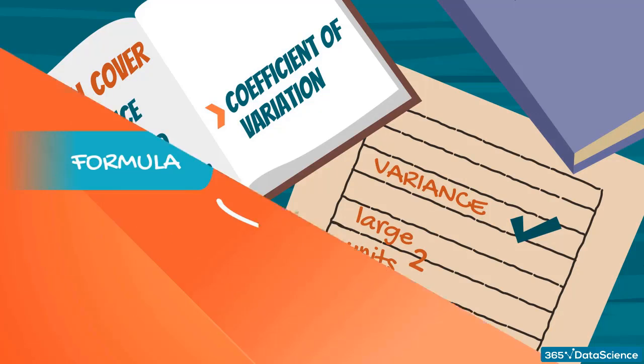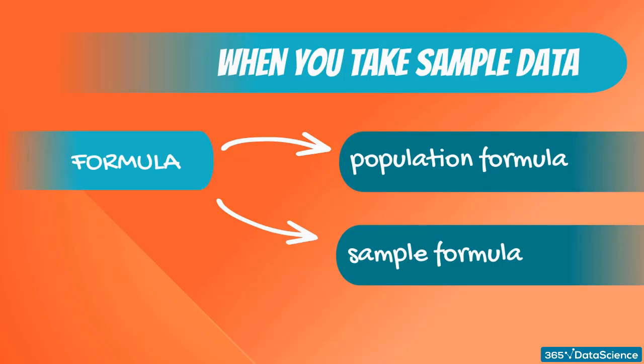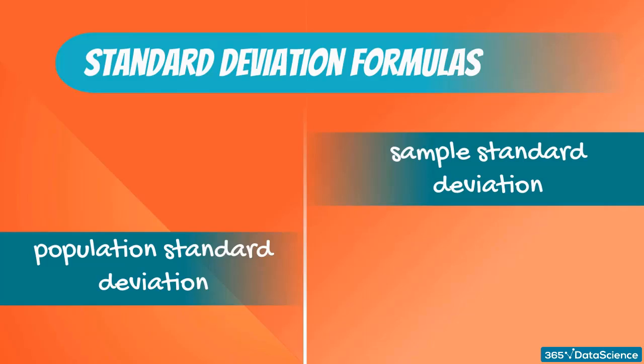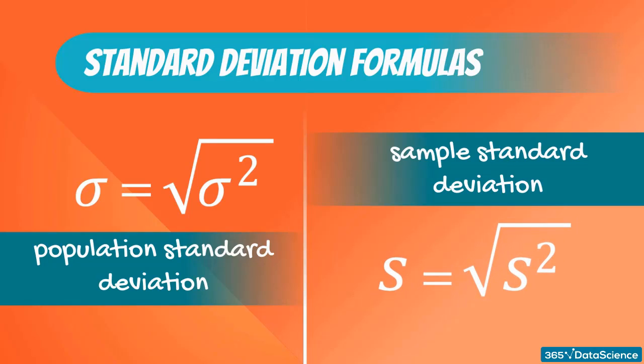As we saw, there are different measures for the population and sample variance. Consequently, there is also population and sample standard deviation. The formulas are the square root of the population variance and square root of the sample variance, respectively.